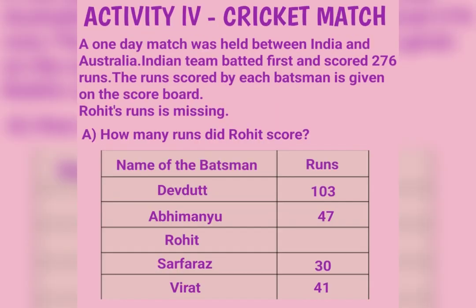Activity 4: Cricket Match. A one-day match was held between India and Australia. The Indian team batted first and scored 276 runs. The runs scored by each batsman are given on the scoreboard. Rohit's runs are missing. Question A: How many runs did Rohit score? Scoreboard — Devadath: 103, Abhimanyu: 47, Rohit: ?, Sarfaraz: 30, Virat: 41.